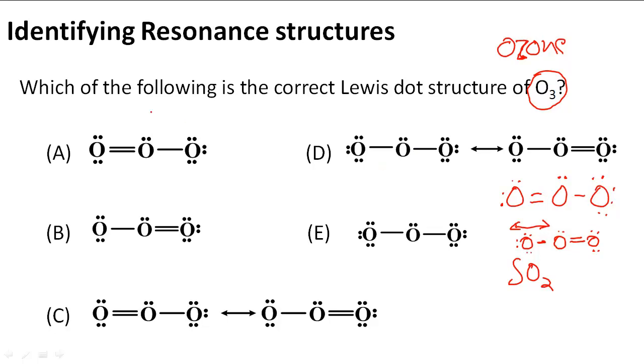So we have to find one of these answers here that actually shows and represents O3 accurately because it's a resonance structure. So we have to find one that shows more than one Lewis structure. So A shows a Lewis structure that is a correct Lewis structure, but it doesn't show the resonance structure. So that means A, even though it's correctly written and it matches what we have over here, is not what we're looking for.